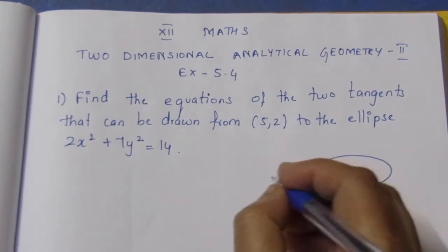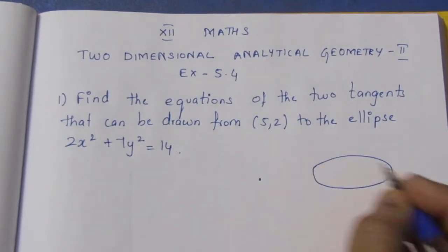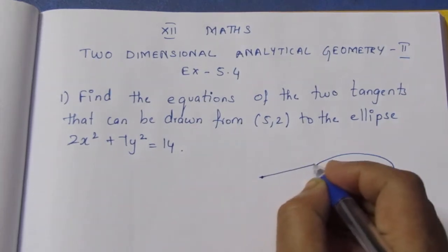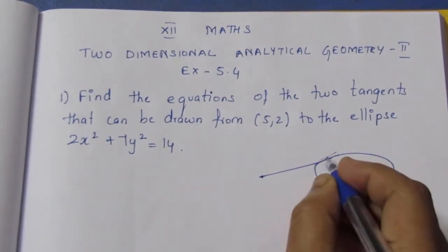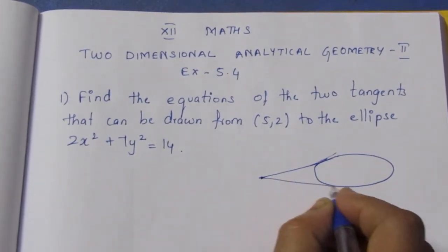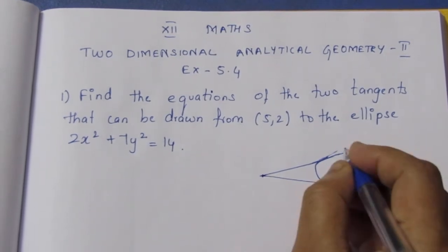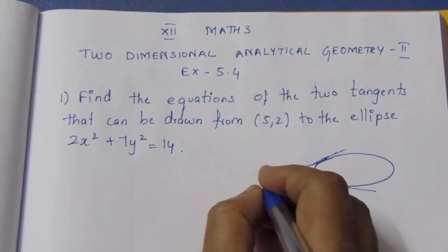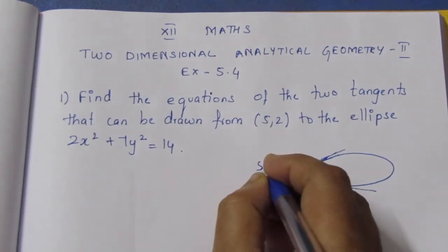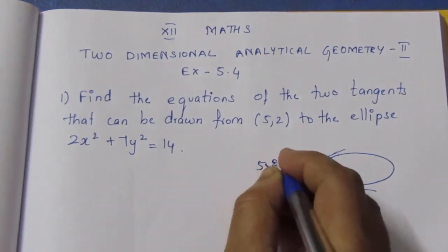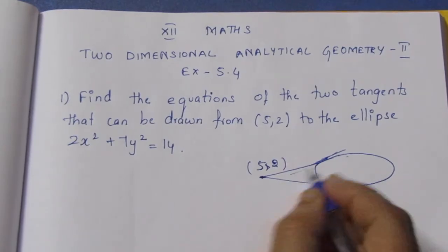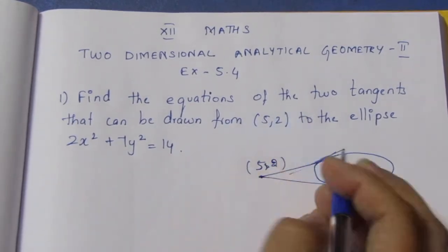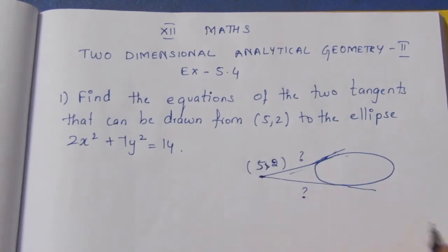The point (5,2) is given, and from that point we need to draw 2 tangents to the ellipse. I am going to draw a rough diagram. This point is (5,2), and from (5,2) two tangents are to be drawn to the ellipse. We need to find the equation of these 2 tangents.